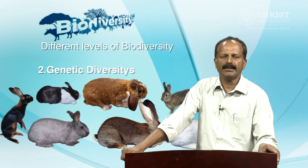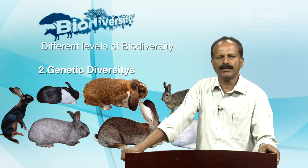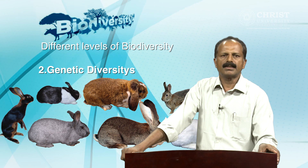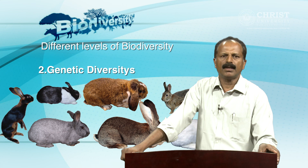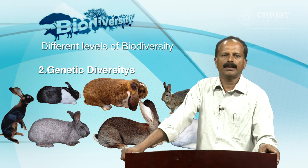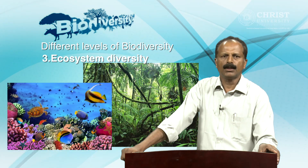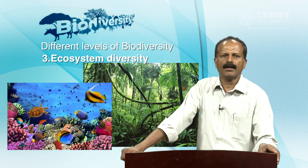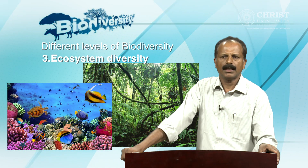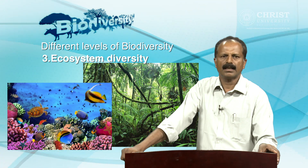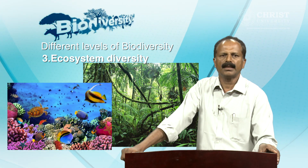Number two: genetic diversity. It is the variety in the genetic makeup of individuals within a species. In the same species, each individual is different from the other. The evolution of new species depends on the amount of genetic variation. Number three: ecosystem diversity. It is the diversity of habitats found in an area. It refers to the variety of forests, deserts, grasslands, aquatic ecosystems, etc., that occur in an area.